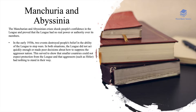It's really important to consider the cases of Manchuria and Abyssinia. The Manchurian and Abyssinian crises shook people's confidence in the League and proved that the League had no real power or authority over its members. In the early 1930s, two events destroyed people's belief in the ability of the League to stop wars. In both situations the League did not act quickly enough, or made poor decisions about how to suppress the aggressor nation, showing that smaller countries could not expect protection and that aggressors such as Hitler had nothing to stand in their way.